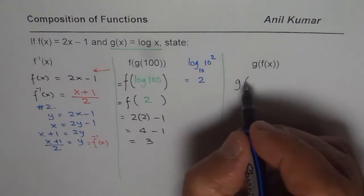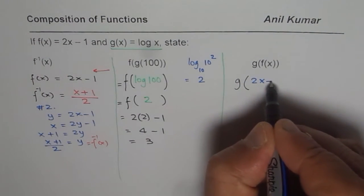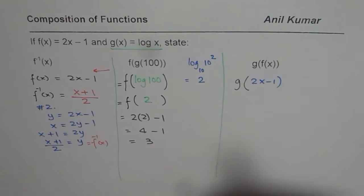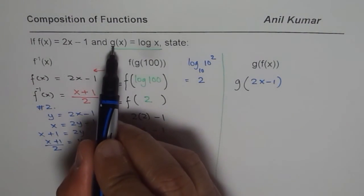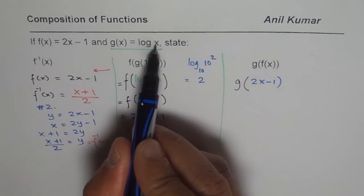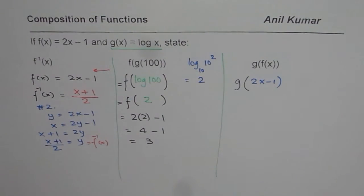Let me write down 2x minus 1. So, g of 2x minus 1. Now, g of 2x minus 1 means we have to replace x with 2x minus 1. You get the idea.